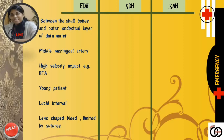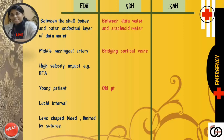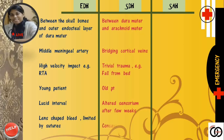Second, subdural hemorrhage. Here the bleeding occurs between the meningeal layer of the dura mater and the arachnoid mater. It usually occurs in old patients as their brain undergoes atrophy, so the bridging cortical veins become taut. So on trivial trauma only, e.g. fall from bed, these veins are torn and cause the bleeding. The patient presents with altered sensorium after few weeks of trauma and on CT scan the bleed is seen as crescent-shaped with no suture limitation.